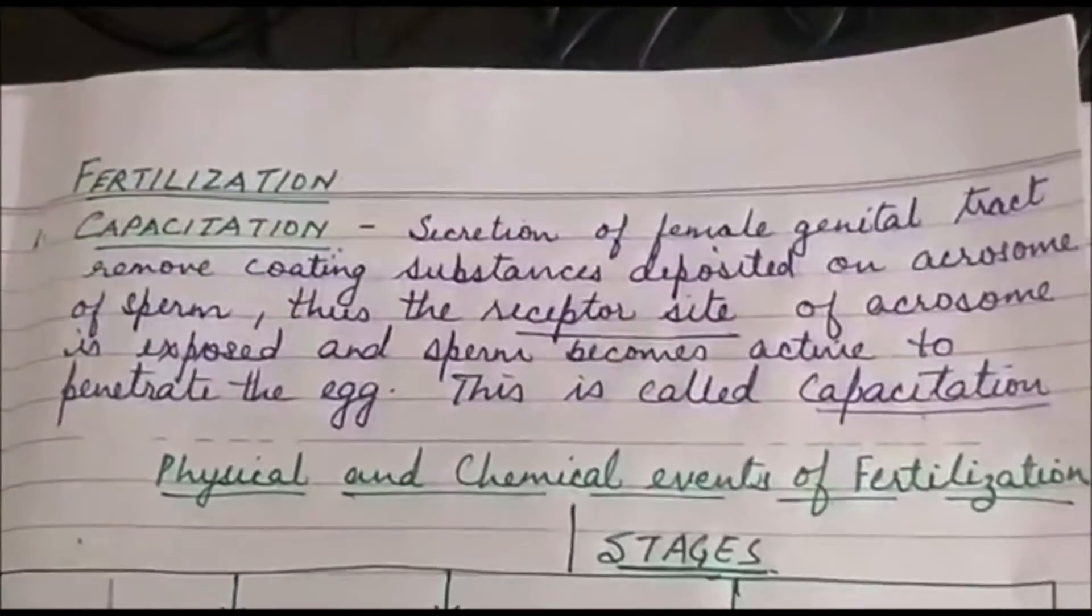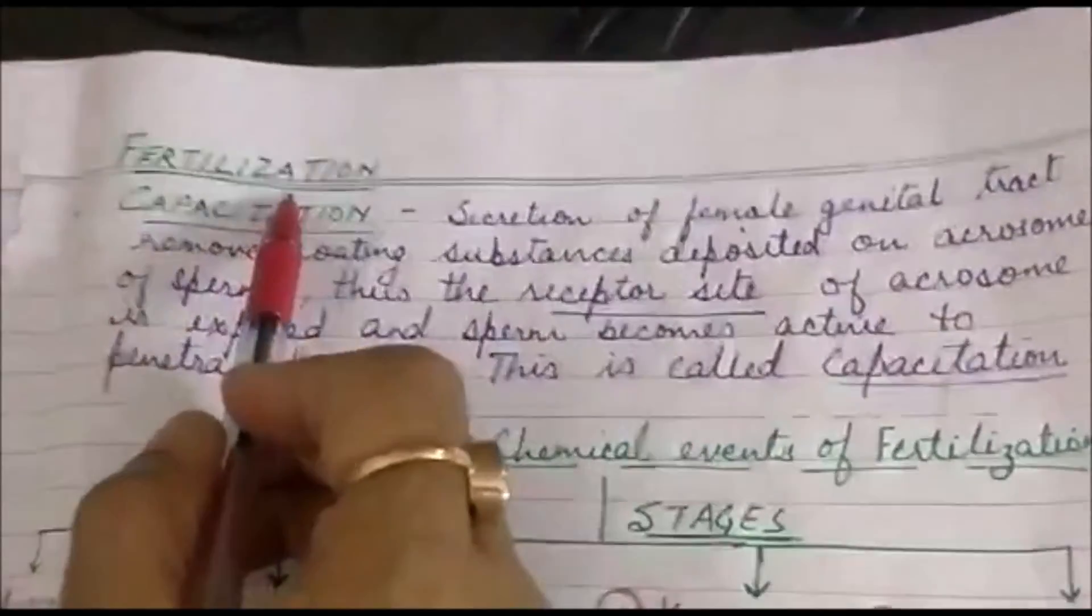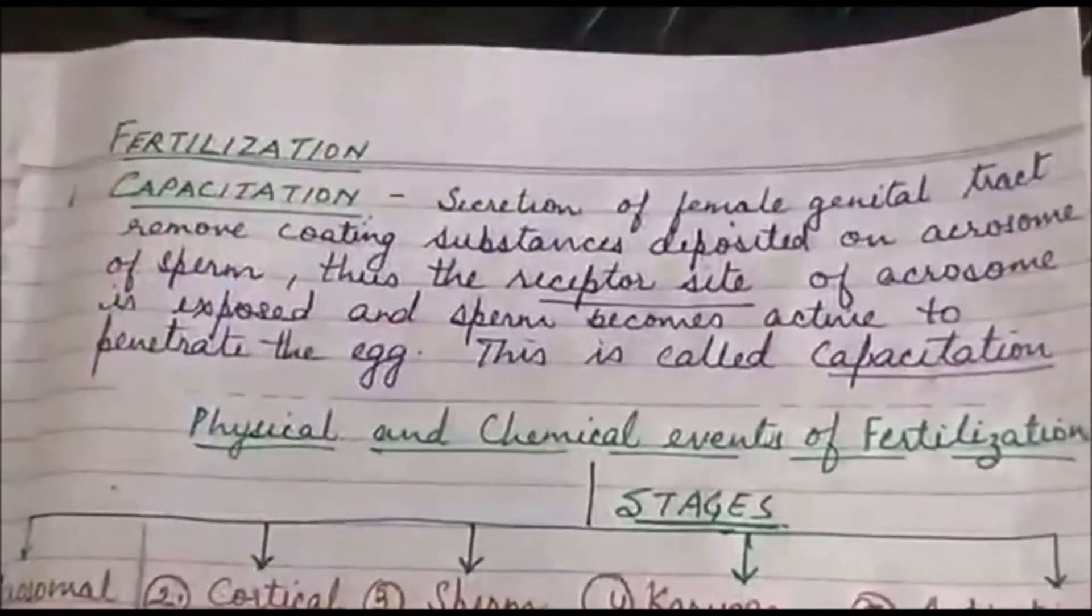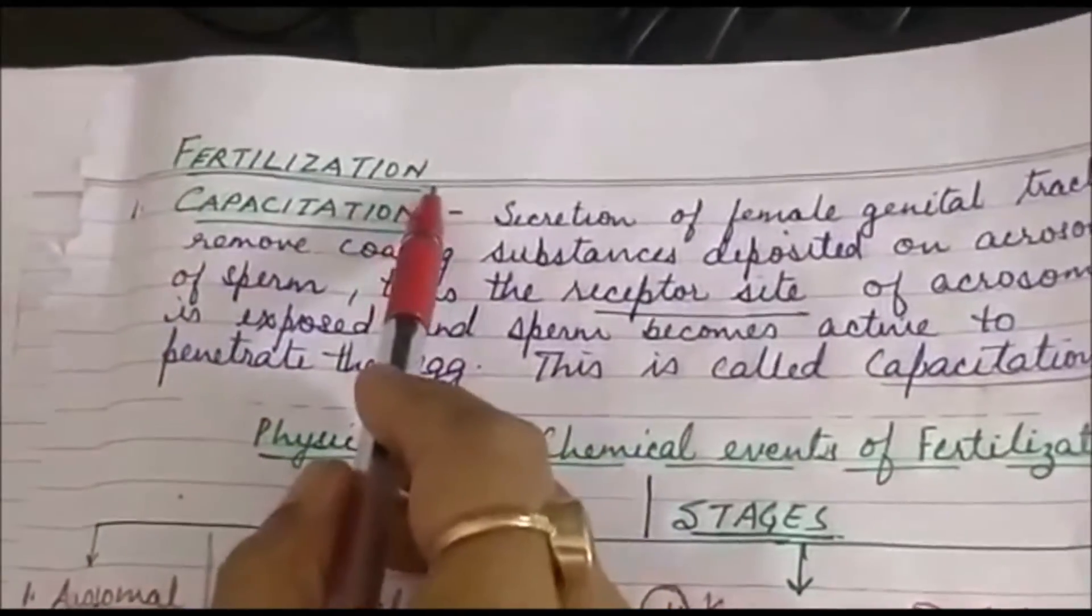Chapter 3, human reproduction in continuation to it, video number 10. Today we are going to study the topic fertilization. Fertilization is fusion of male and female gamete to form zygote.